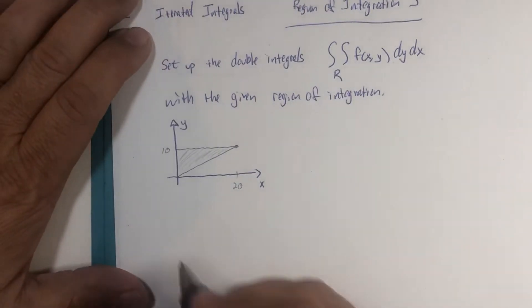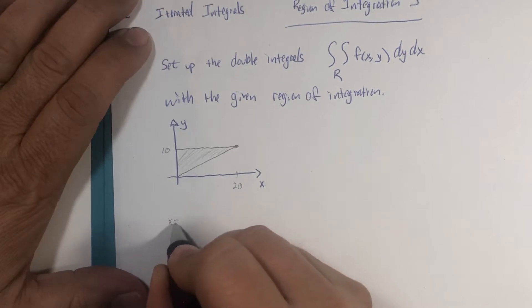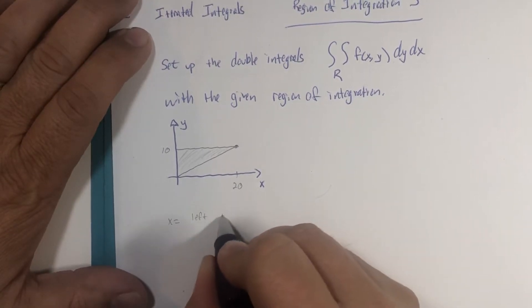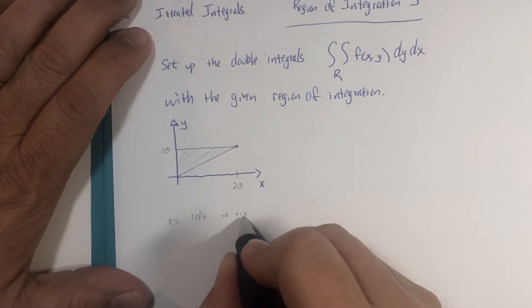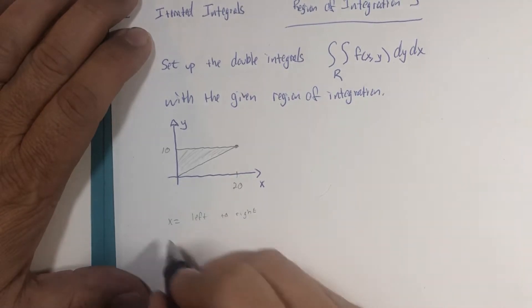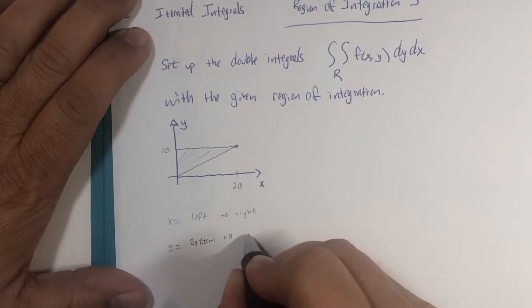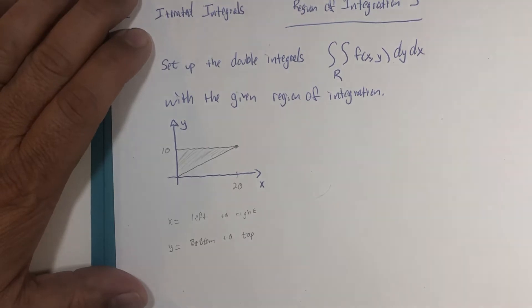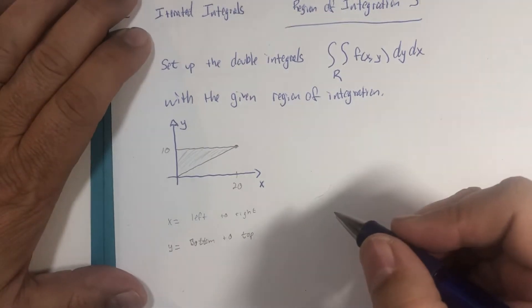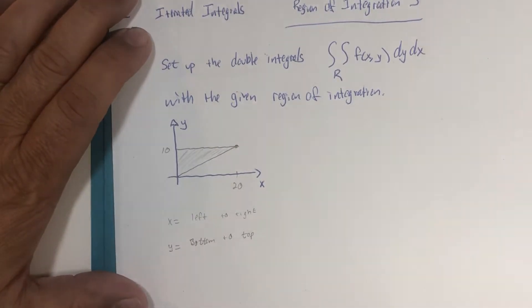First, when we think of x, we are thinking from left to right, small to big, and when we're thinking of the y values, we're thinking of the bottom or the lower section to the top. And one more little detail.